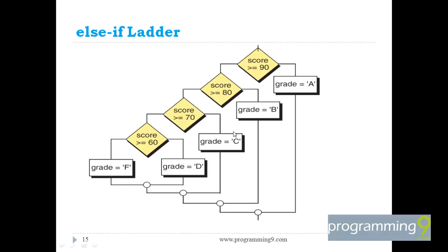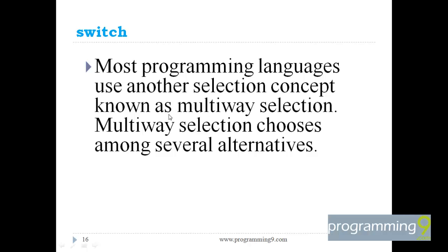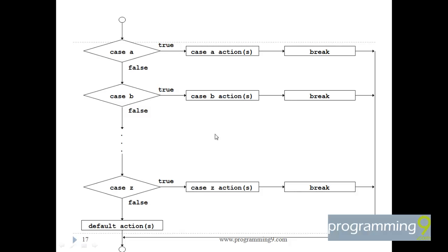The same thing can be achieved using a switch. Most programming languages use another selection concept known as multi-way selection. Whenever we have multiple choices — more than one or two — we use the switch statement. In a switch, we specify a condition yielding a value, and based on that value, the appropriate case is executed. For example, if the value is A, case A goes into action. If all cases fail, it takes the default action.